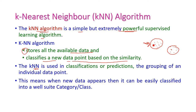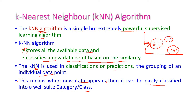KNN is used in both classification as well as prediction — that is, grouping of individual data points. When new data appears, it can be easily classified into a well-suited category or class. For example, if we have three classes A, B, and C, and a new data point appears, it will be allocated to the class it most closely resembles — say, class C.